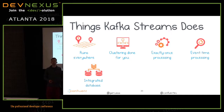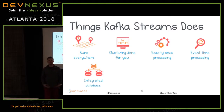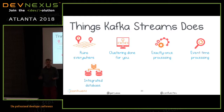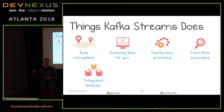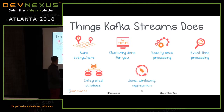Kafka Streams has the capability to expose this state store outside the processing application. You can turn your application — one that consumes streams and runs running averages — into a key-value store. There's a concept of interactive queries in Kafka Streams that lets you expose state, and after that you can expose it through a REST API or any RPC mechanism, and query the state of the application directly rather than publishing to another Kafka topic.